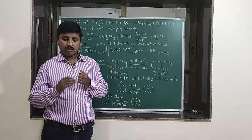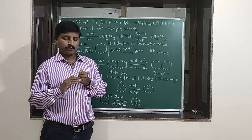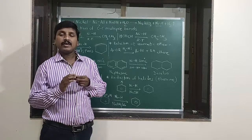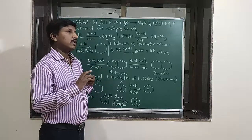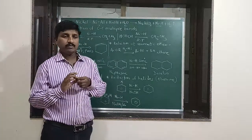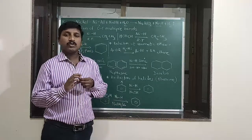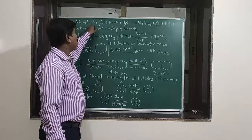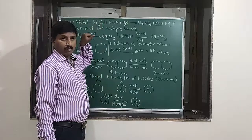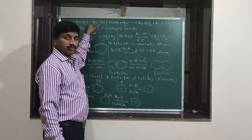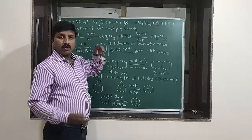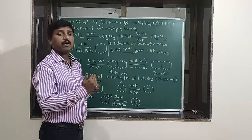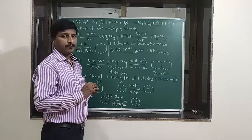Raney Nickel is a nickel metal with weakly bonded hydrogen. It is prepared in the laboratory by adding an ice-cold solution of NaOH to a nickel-aluminum alloy in a 1:1 proportion. The ice-cold solution is added to the alloy over a period of 2 to 3 hours.